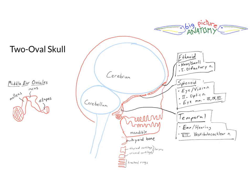All right, welcome. This is Big Picture Anatomy with Larry Frolic. Today we're looking at what I call the two oval skull. This is a way of understanding the skull as a framework for putting the entire anatomy of the head together.